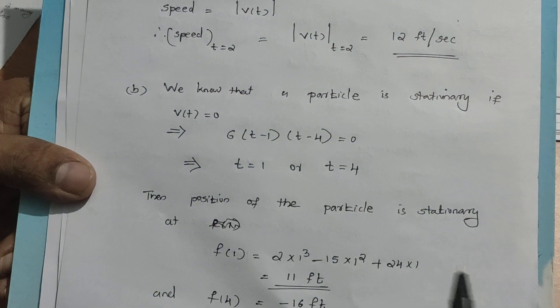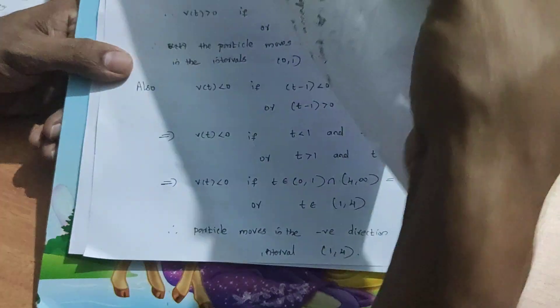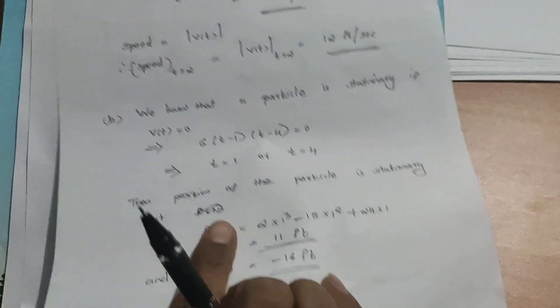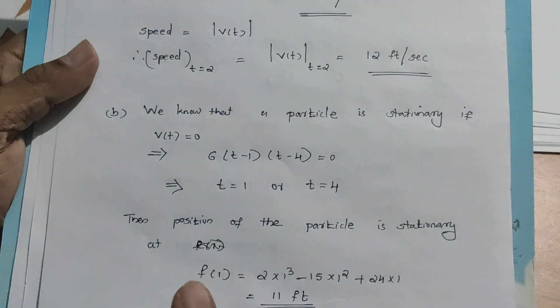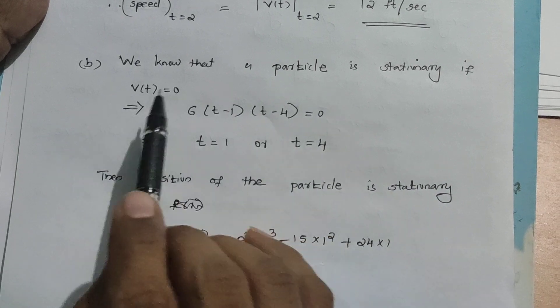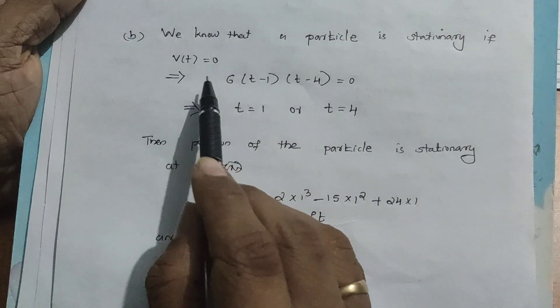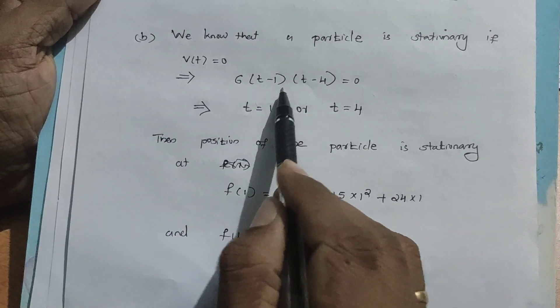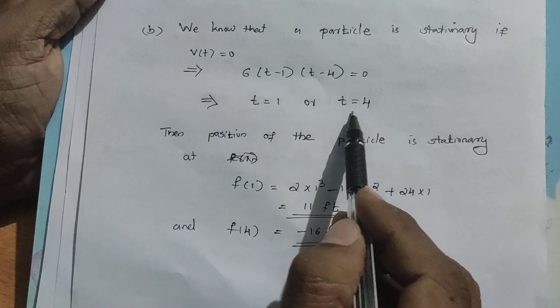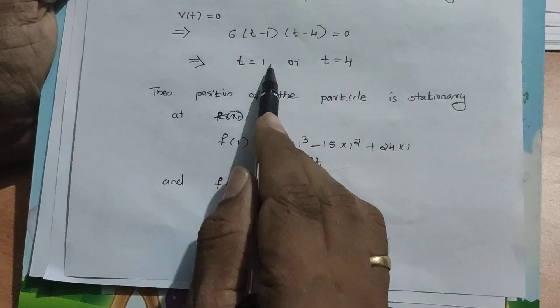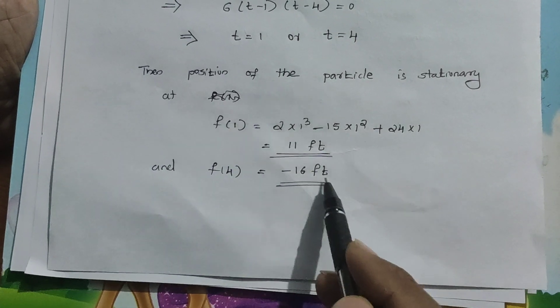Next, question B: determine the position of the particle when it is stationary. Stationary means velocity equals 0. Setting v(t) = 0 gives 6(t - 1)(t - 4) = 0, which implies t = 1 or t = 4. The position of the particle when stationary: s(1) = 11 feet and s(4) = -16 feet.